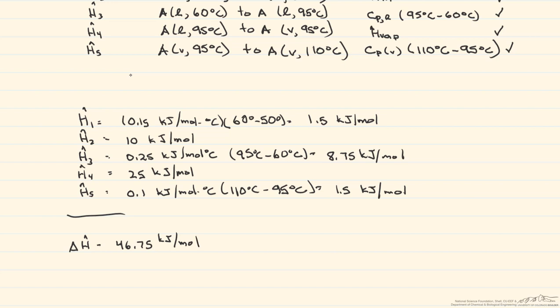One thing you might note from this calculation is that a significant amount of heat comes from the latent heats as opposed to the sensible heat. So whenever you're putting together one of these process paths, you have to be very careful to include the phase change in your calculations.